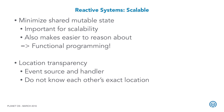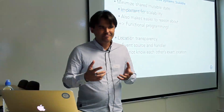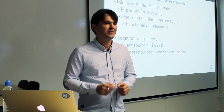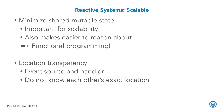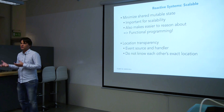Reactive systems are scalable. Scalable means that when your load goes up or down, you need to efficiently use resources — maybe add or remove machines. This is really helped when your shared state is not mutable. This way you can move components from one machine to another in an easy and transparent way. Basically I'm advocating functional programming: the less mutable variables you have, the better. Location transparency also really helps — the less you know about the subsystems to which you send messages, the easier they can be migrated from one machine to another.